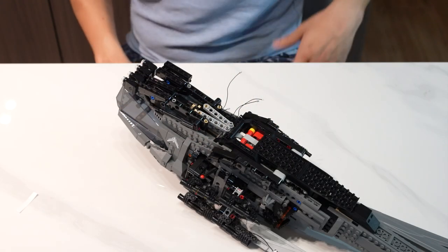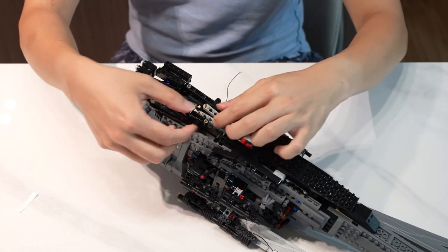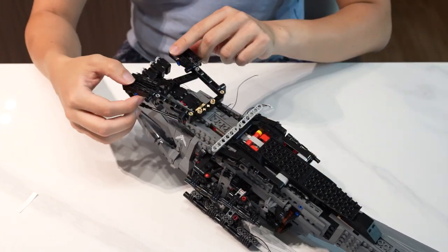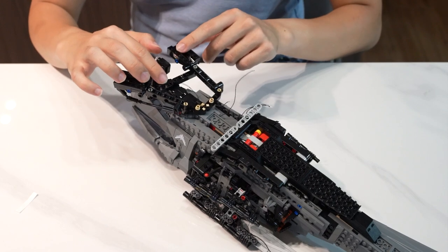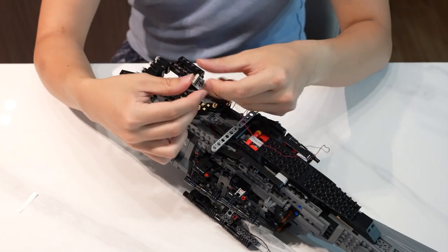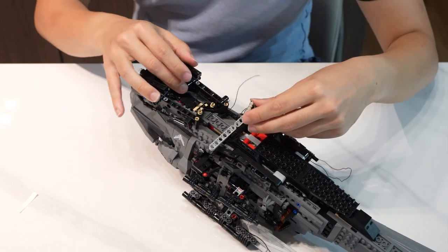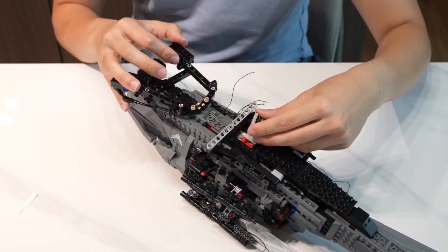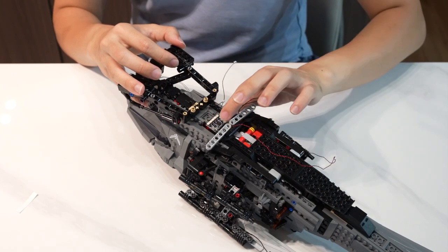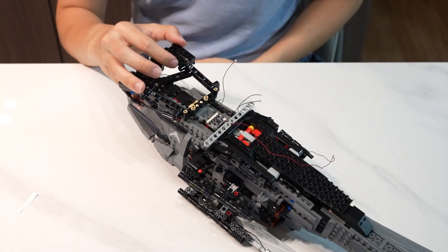We'll now install the module into this area. First, disconnect the two gray beams here, so that the front landing gears are loose now. Bring up the remote control module, peel off the adhesive, and make way by pulling the landing gear away, and we can stick the module here. After that, we'll connect the four groups of lights to the module.